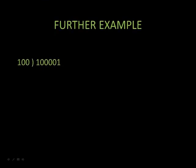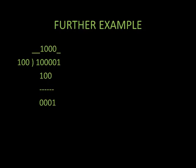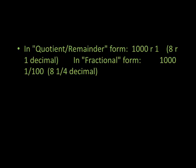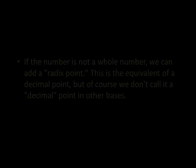Now let's look at a further example. Here we are dividing 100001 by 100, or 33 divided by 4 in decimal. We follow our first step by writing it in the long division form, remembering to carry out our subtraction as we go. Remember that we have more than one way to represent the answer in the quotient.